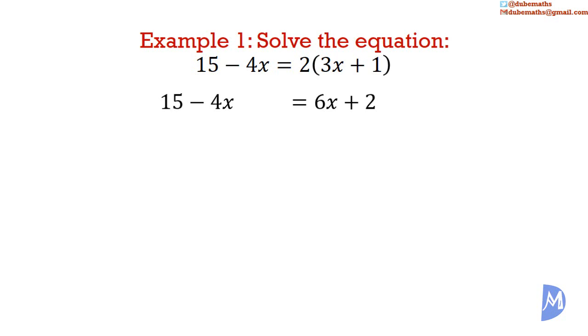We next put all the x's on one side and all the numbers on the other side. Let us put the x's on the left-hand side. We remove the 6x from the right-hand side by adding negative 6x to both sides. 6x minus 6x, they cancel to leave positive 2 on the right-hand side. Minus 4x minus 6x is equal to negative 10x.